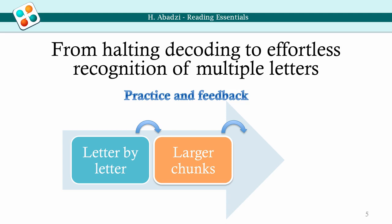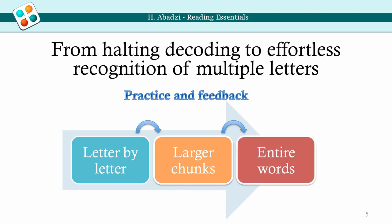new nerve endings develop in their brains. Like electrical wiring, the nerves connect visual and verbal regions. Wiring speeds up transmission. With further practice, people progress to recognition of multiple letters and entire words simultaneously.